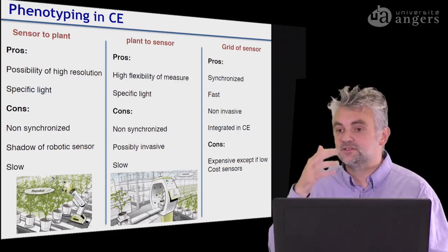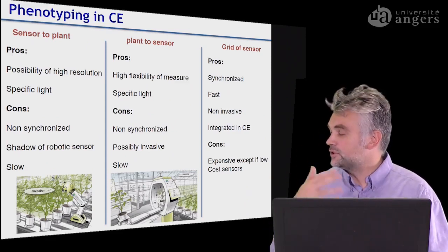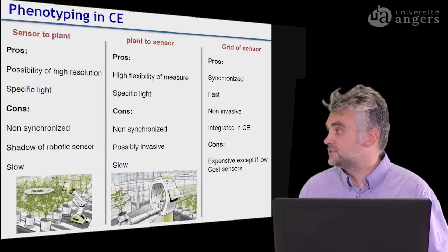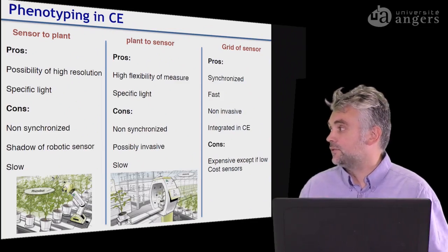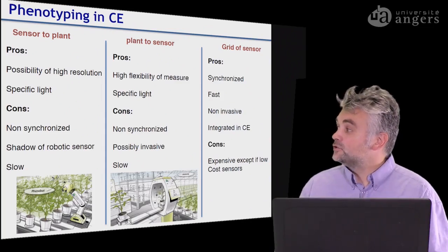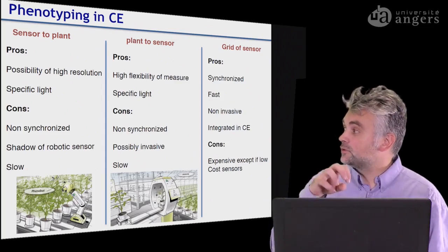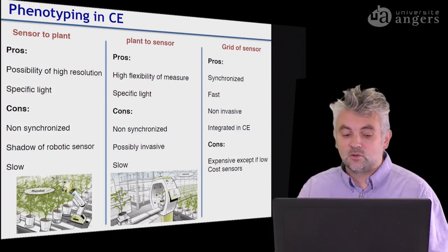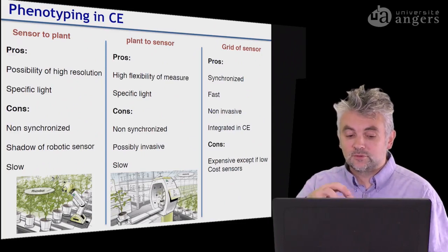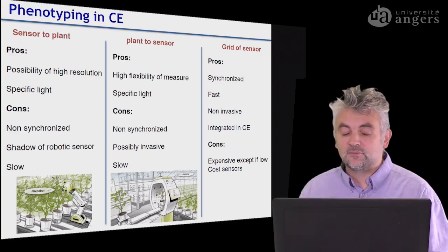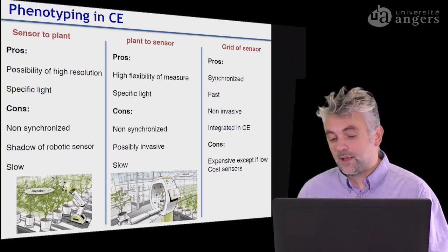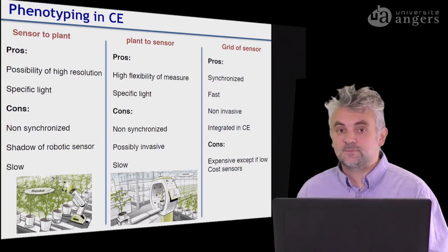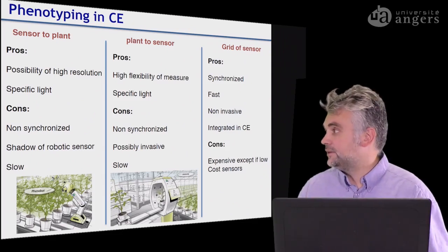For instance, plants have circadian cycles which correspond to different physiological states at different times of the day. Also, since you bring robots close to the plant, you might cast a shadow onto the plant which might interfere with the experiment. And again, this approach is rather slow.